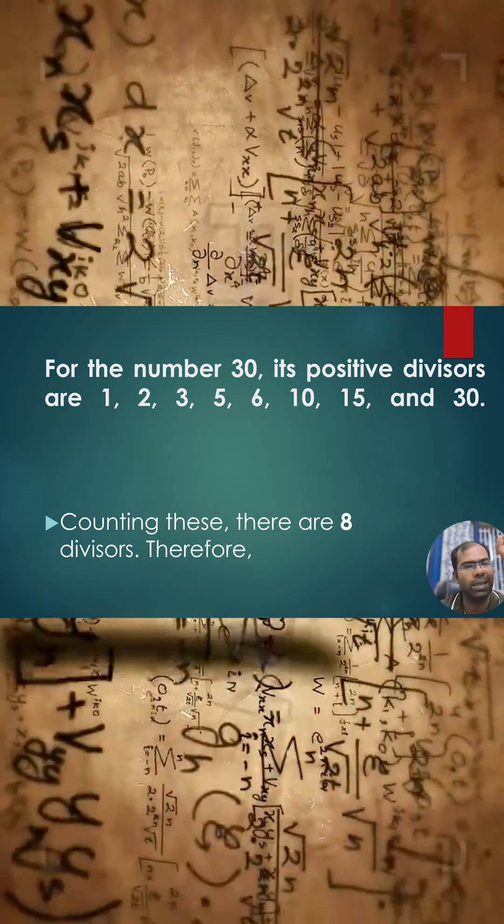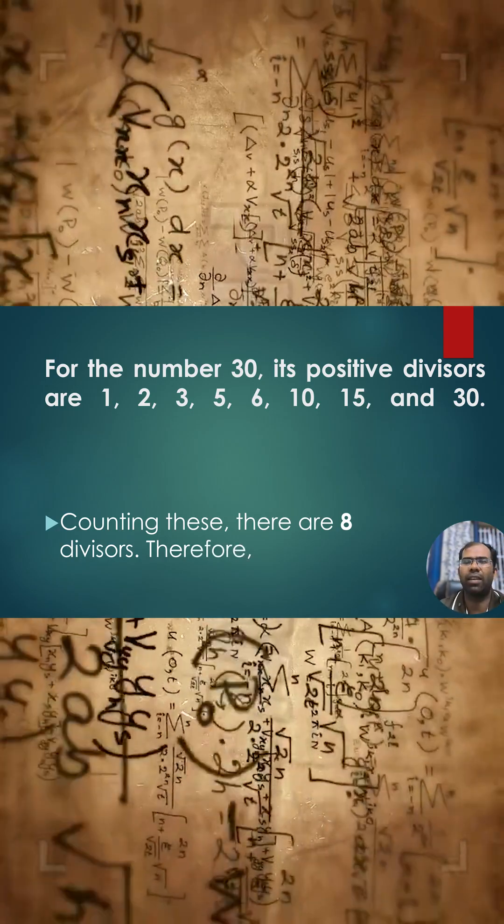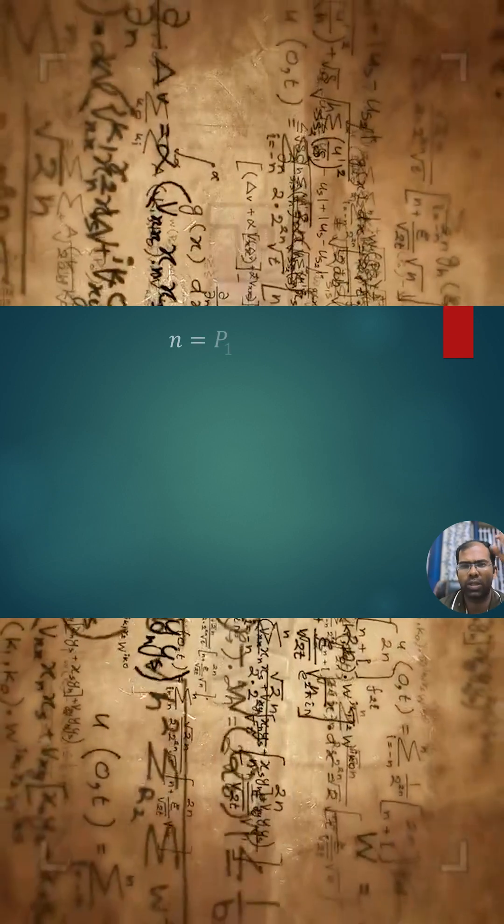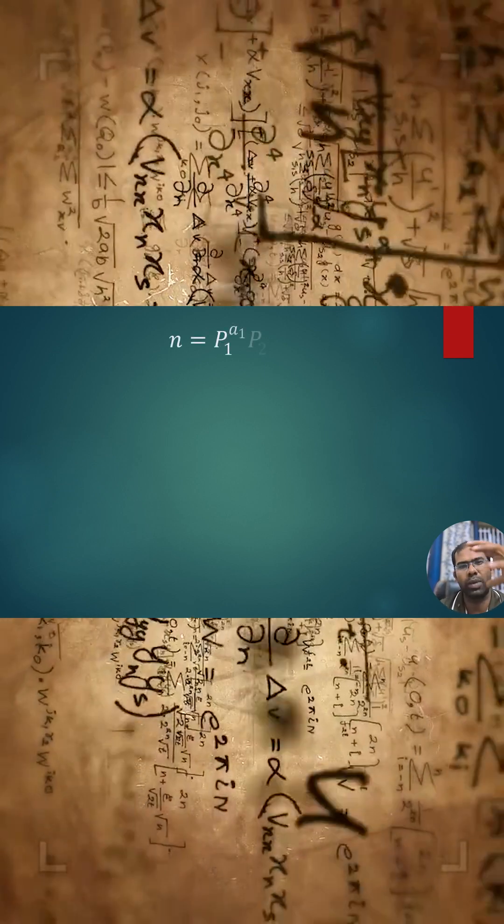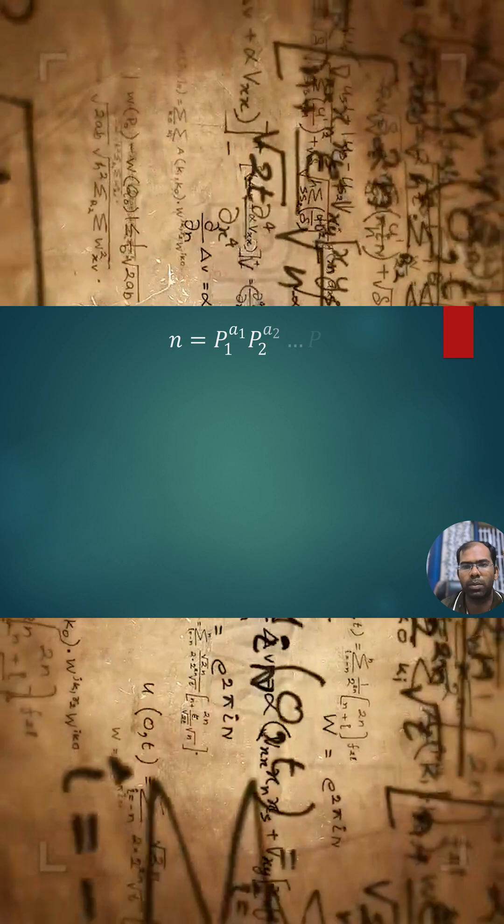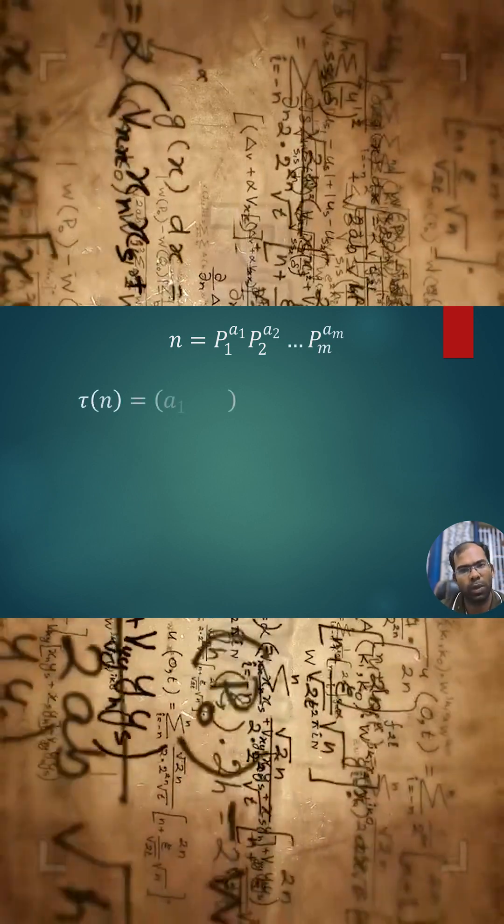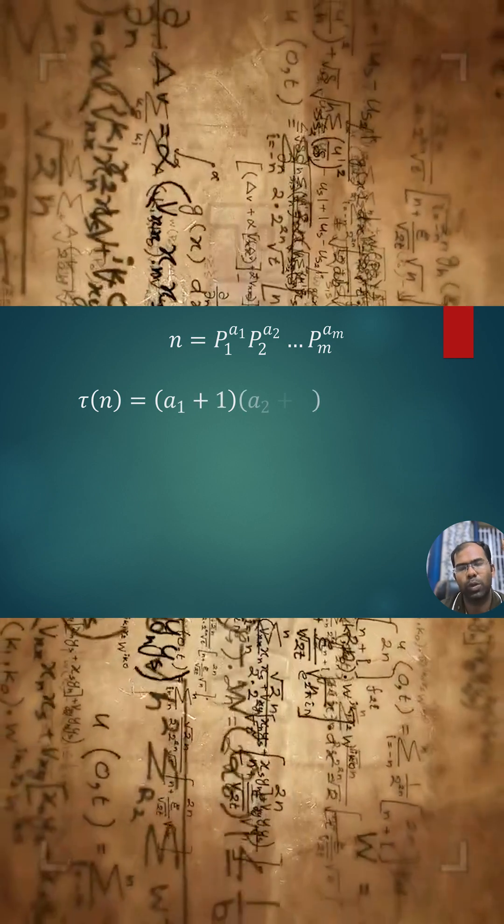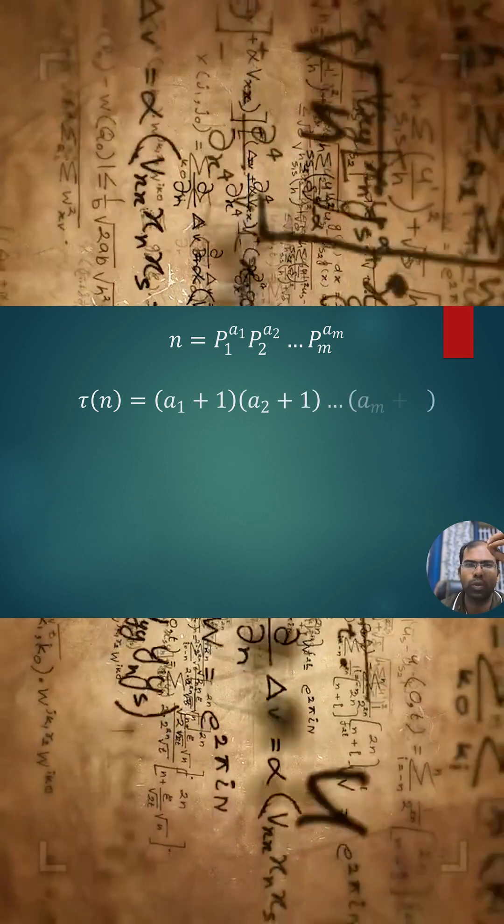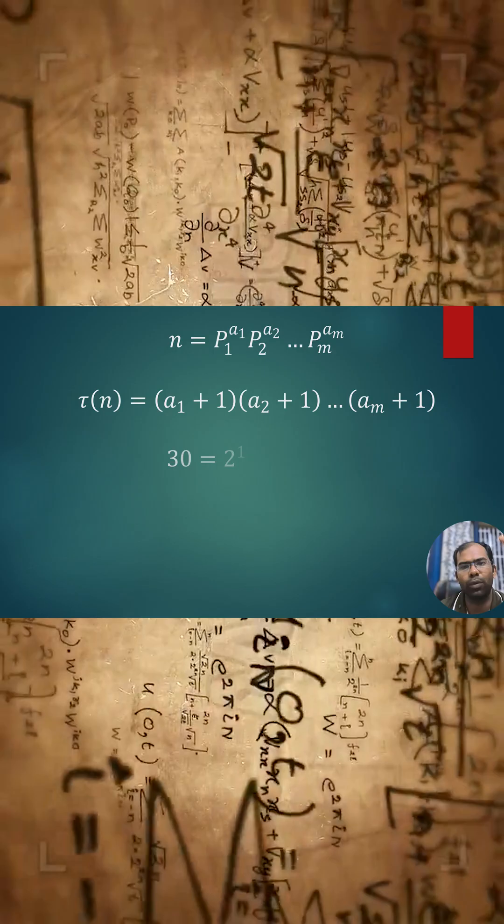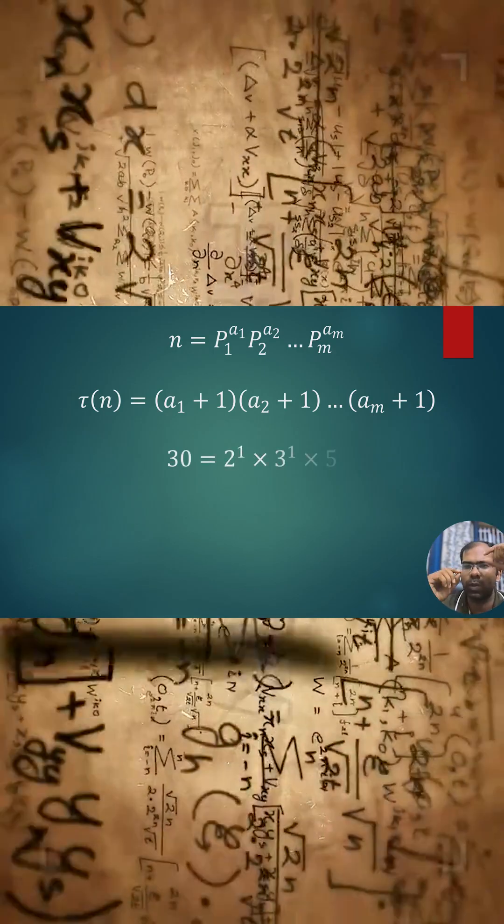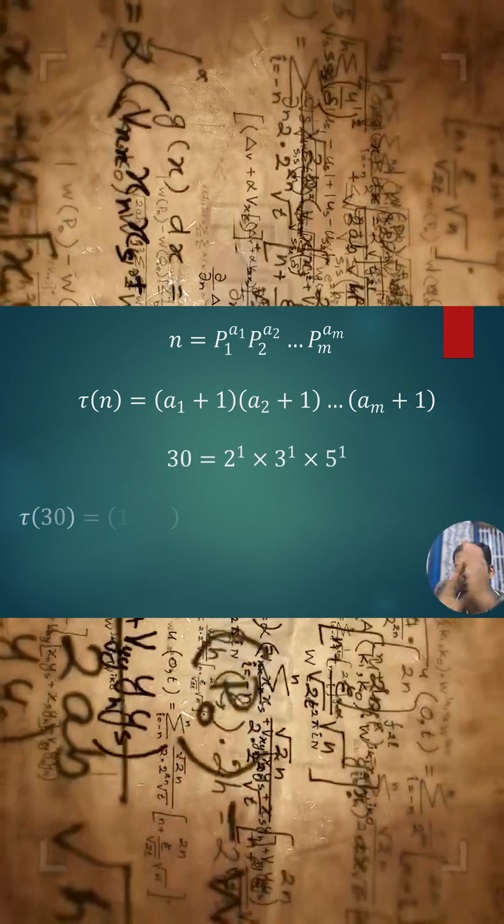Now we will have the tau function formula. Suppose n is expressed as multiples of prime numbers raised by their powers: n = p₁^a₁ × p₂^a₂ × ... × pₘ^aₘ. For the tau function, each power has to be increased by 1 and you multiply them: τ(n) = (a₁ + 1)(a₂ + 1)...(aₘ + 1).